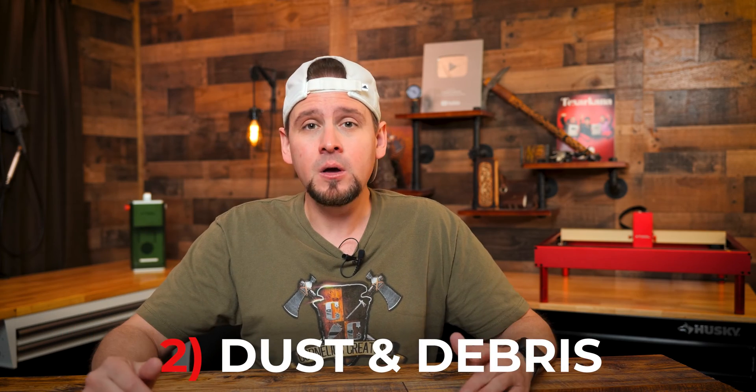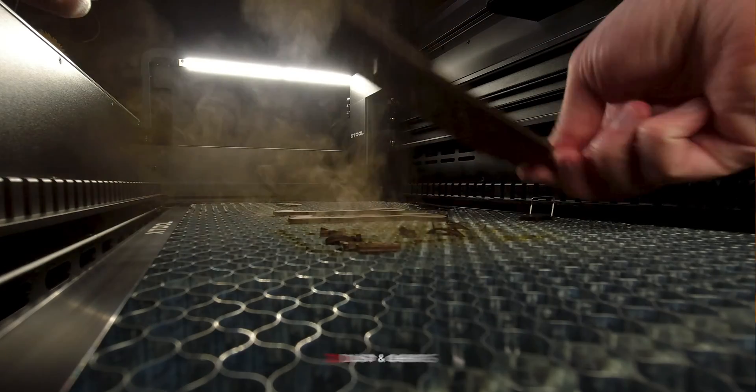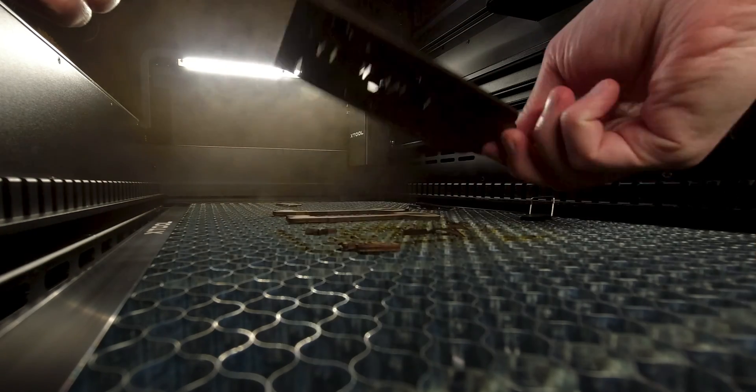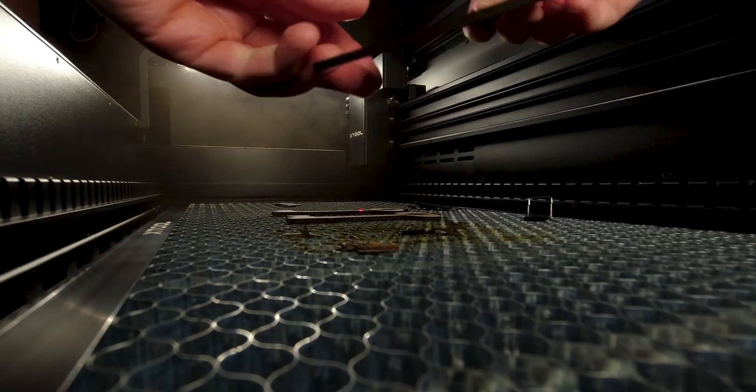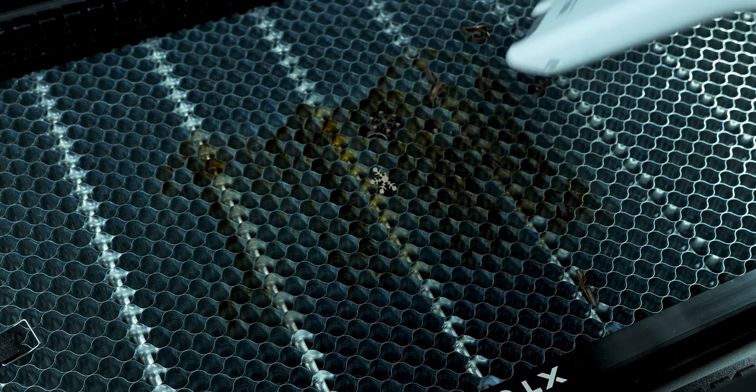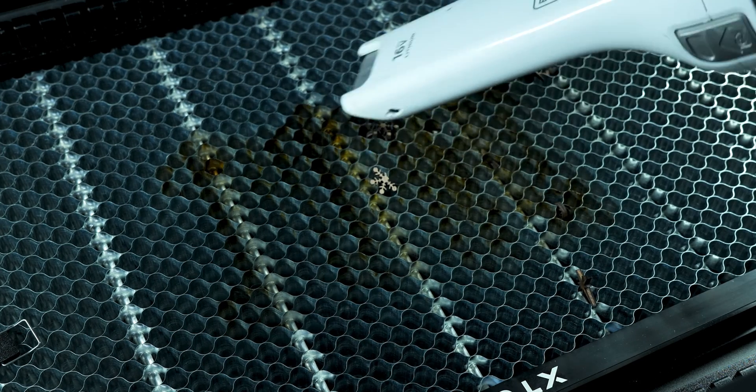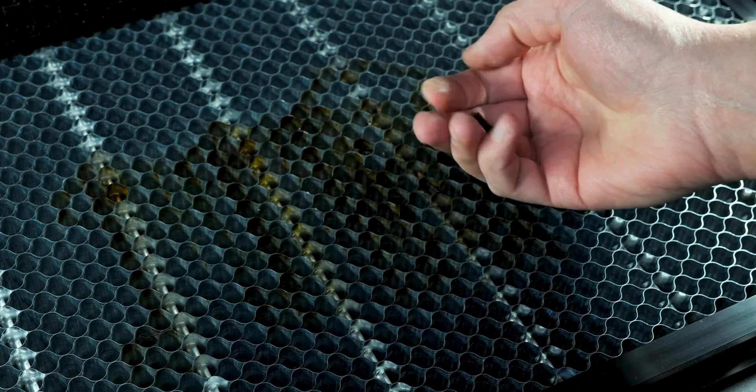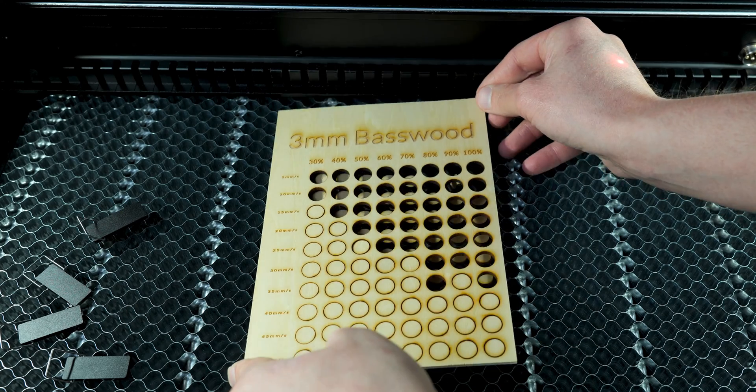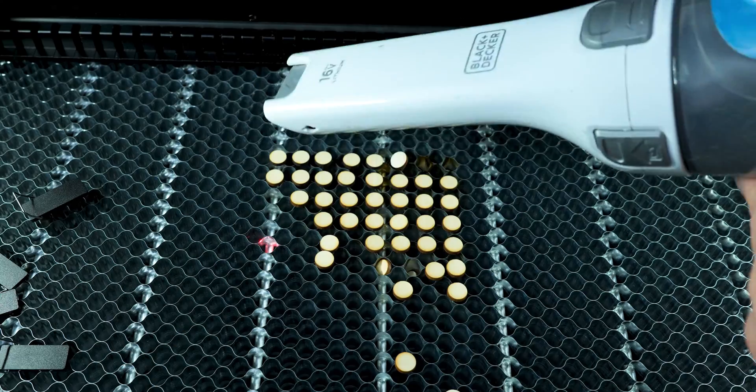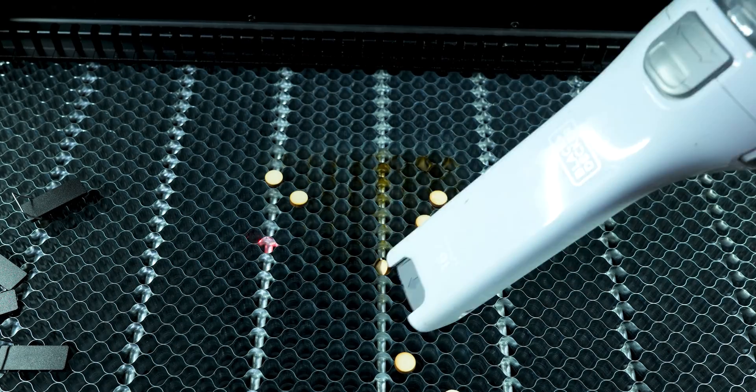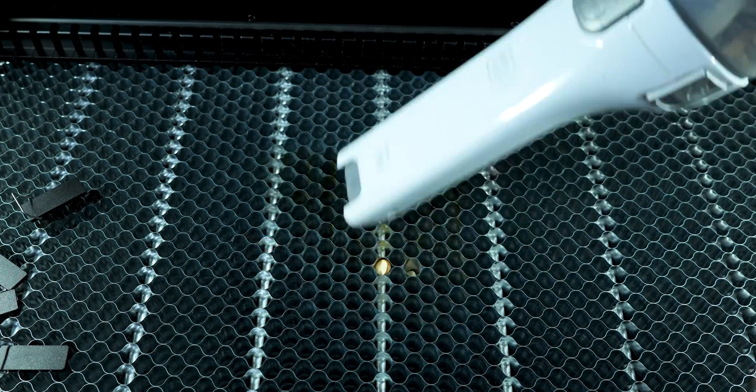And number two: dust and debris. Over time, dust and debris can accumulate on the lens and around the laser engraving machine. When the laser beam interacts with this buildup, it can heat up and potentially ignite, leading to a fire. So be sure to carefully clean the laser lens and the engraving beds of any debris. I personally clean my engraving bed after every engraving and the laser lens every four to five projects depending on the intensity.